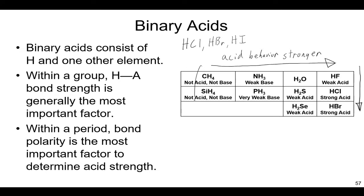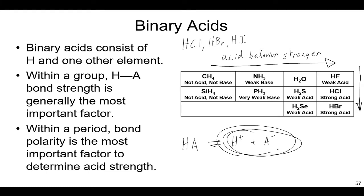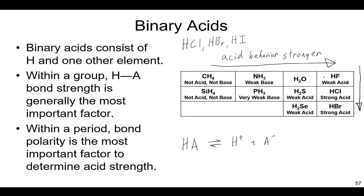Within a group — remember, groups are these columns; carbon and silicon are in the same group; fluorine, chlorine, bromine are in the same group, the halogens — bond strength is really the most important factor. The stronger that bond, if you think about what an acid is: it's something that donates its proton, breaking apart this chemical bond between H and A. So bond strength — the harder it is to break, the less it's going to behave like an acid. HF has a very, very strong bond, so even though HCl, HBr, and HI are all strong acids, HF is a weak acid because that bond is so strong. Within a given group like the halogens, bond strength is really what determines how acidic it is.